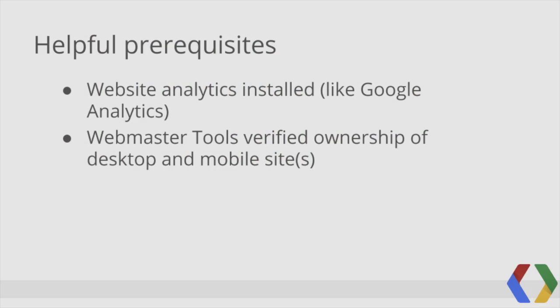Today, it's less about just building a smartphone site, since many of you have already done that, and it's more about facilitating a great user experience. To improve your site, helpful prerequisites include website analytics installed — I will use Google Analytics — and also Webmaster Tools verified ownership of your desktop and mobile sites. If you're using responsive web design, then you only need to verify ownership of one site. If you have separate URLs for desktop and mobile pages, like www and mdot, you'll need to verify two sites.